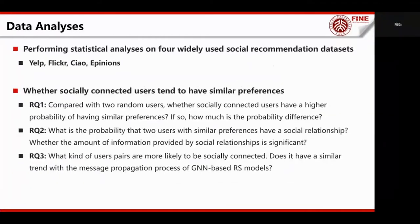We perform statistical analysis on four widely used recommendation datasets. Yelp is an online location-based social network. Flickr is a photo-sharing online image-based social platform. Epinions and Ciao are taken from popular social networking websites that allow users to rate items and write reviews.